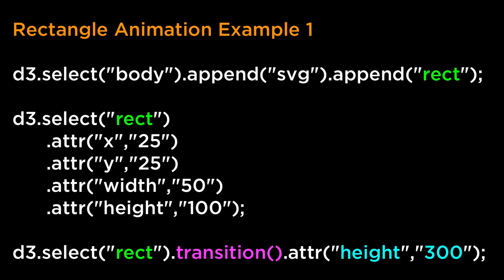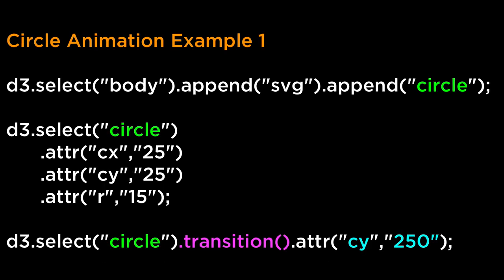For this example, we will have the SVG Rectangle increase its height from 100 to 300, which will elongate the rectangle along the Y axis. Because we do not specify delay or duration, the animation will start immediately and take 250 milliseconds. For the next example, we will have the SVG Rectangle move its starting X drawing point from 25 to 5. For the circle example, we will have the SVG Circle move its CY point from 25 to 250, which will move the circle from near the top of the window to the bottom. We will also have the SVG Circle increase its radius from 15 to 45 units, where part of the circle falls outside of the SVG viewport and will appear cut off.